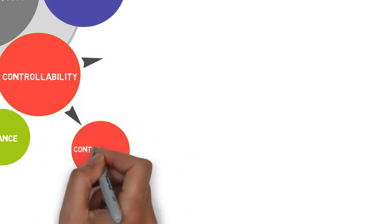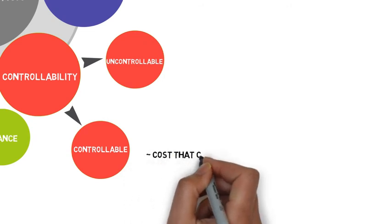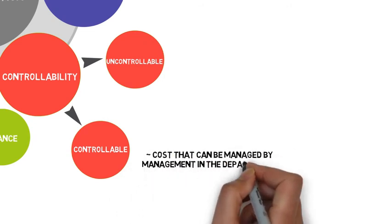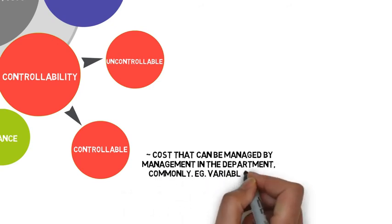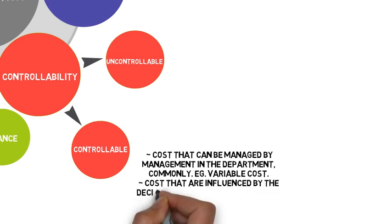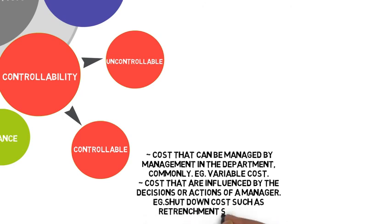Controllability classification is our next stop, and divided into controllable and uncontrollable. Controllable can be defined as cost that can be managed by management in the department, commonly such as variable cost. Controllable also can be defined as cost that are influenced by the decisions or actions of a manager. For example, shutdown costs such as retrenchment salaries.